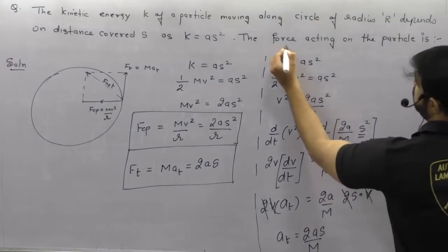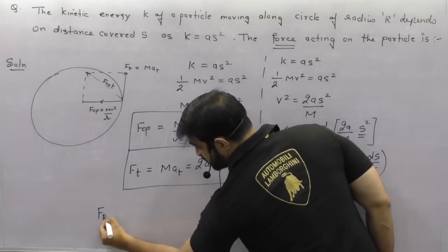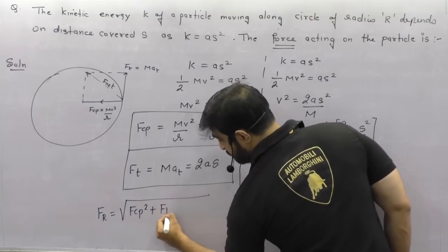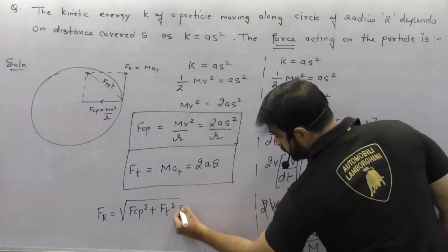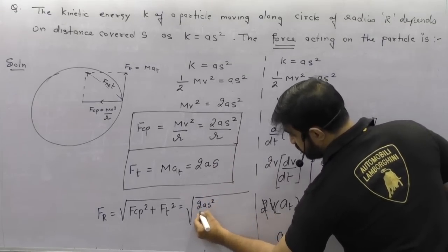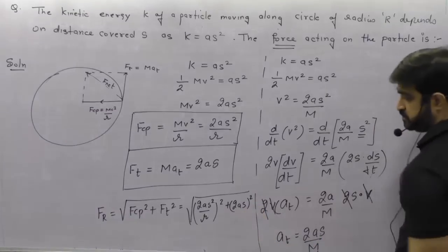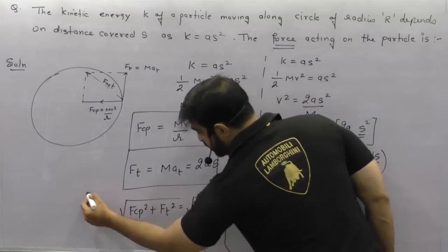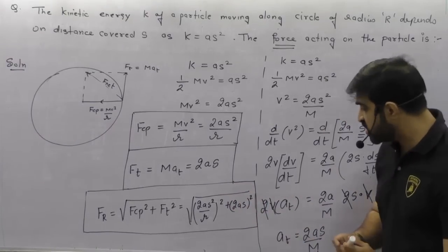The net resultant force is: F_net = √(F_cp² + F_T²) = √((2as²/r)² + (2as)²). You can simplify according to whatever options are given. There are two types of force: centripetal force (changes direction) and tangential force (changes magnitude of velocity). The resultant is the vector sum of F_cp and F_T.